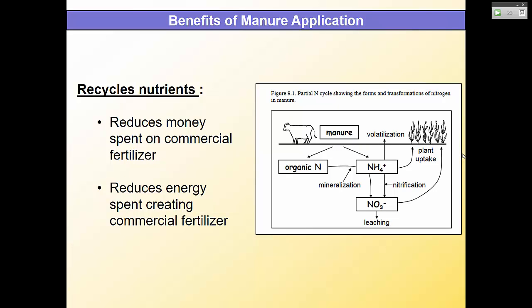What are some of the benefits of manure? Why do people use it? It reduces money spent on commercial fertilizer, particularly if you already have animals on your property and can harness that manure because it has nutrients. It also has value in its organic matter content, building soil quality, which helps water holding, structure, and drainage.